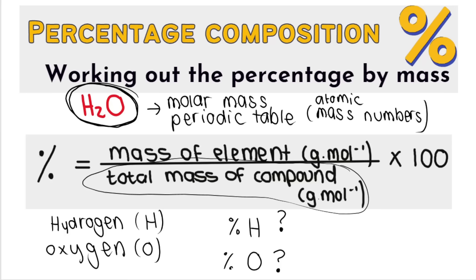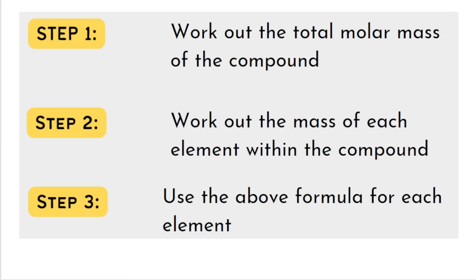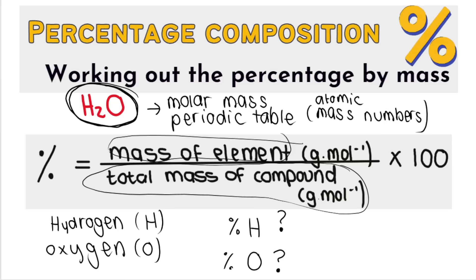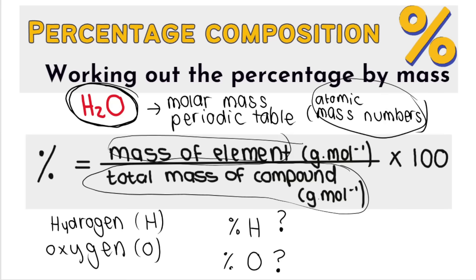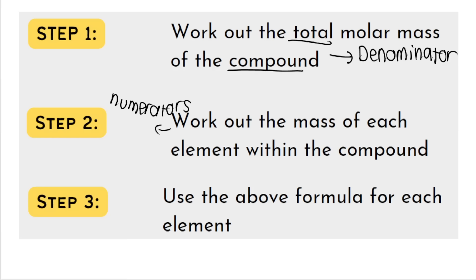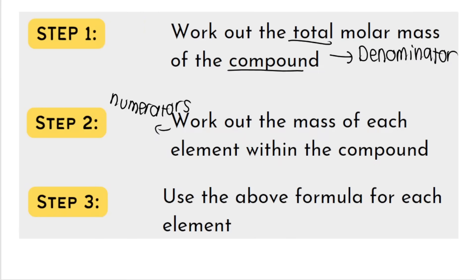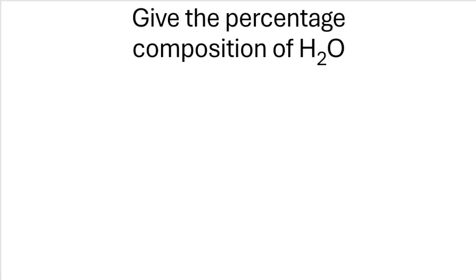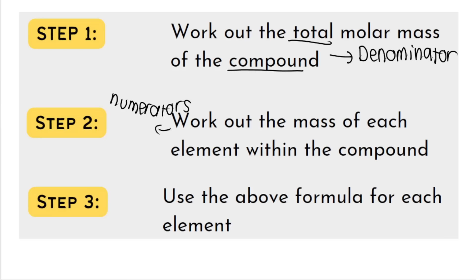The numerator of the fraction is the mass of the elements in that compound. Step one: work out the total molar mass of the compound using atomic mass numbers from the periodic table. Step two: work out the mass of each element within the compound. Step one gives us the denominator, step two gives us the numerators. We use this formula to work out the percentage composition. Let's do step one — work out the total molar mass of H2O.